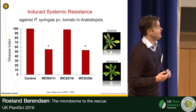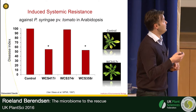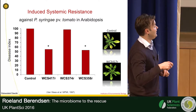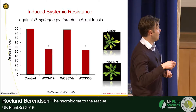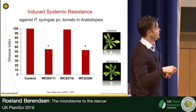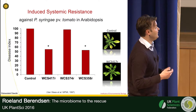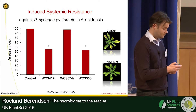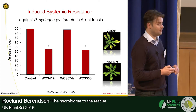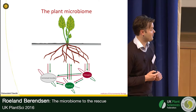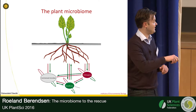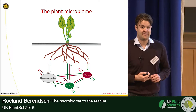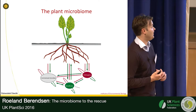When these plants were infected with Pseudomonas syringae in the leaves, the plants colonized by WCS417 and WCS358 became less diseased compared to the control. This is just something I wanted to mention before I focus on the microbiome.